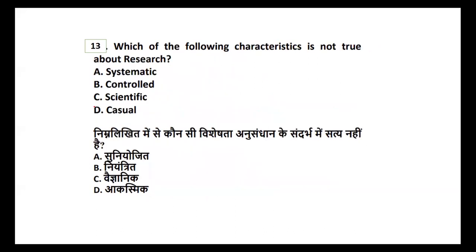Question thirteen: which of the following is not a characteristic of research — systematic, controlled, scientific, or casual? Systematic, controlled, and scientific are all characteristics of research. Something casual cannot be a characteristic of research at all. So the answer is casual.